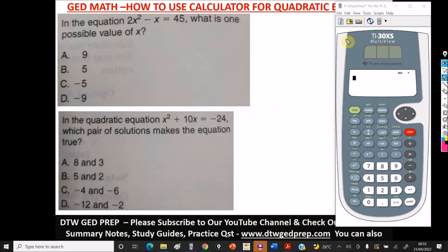So now getting on to the video, how to use your calculator to solve this. This question says, in the equation 2x² - x = 45, what is one possible value of x? Now you can see this, you have options 9, 6, -5, and -9.